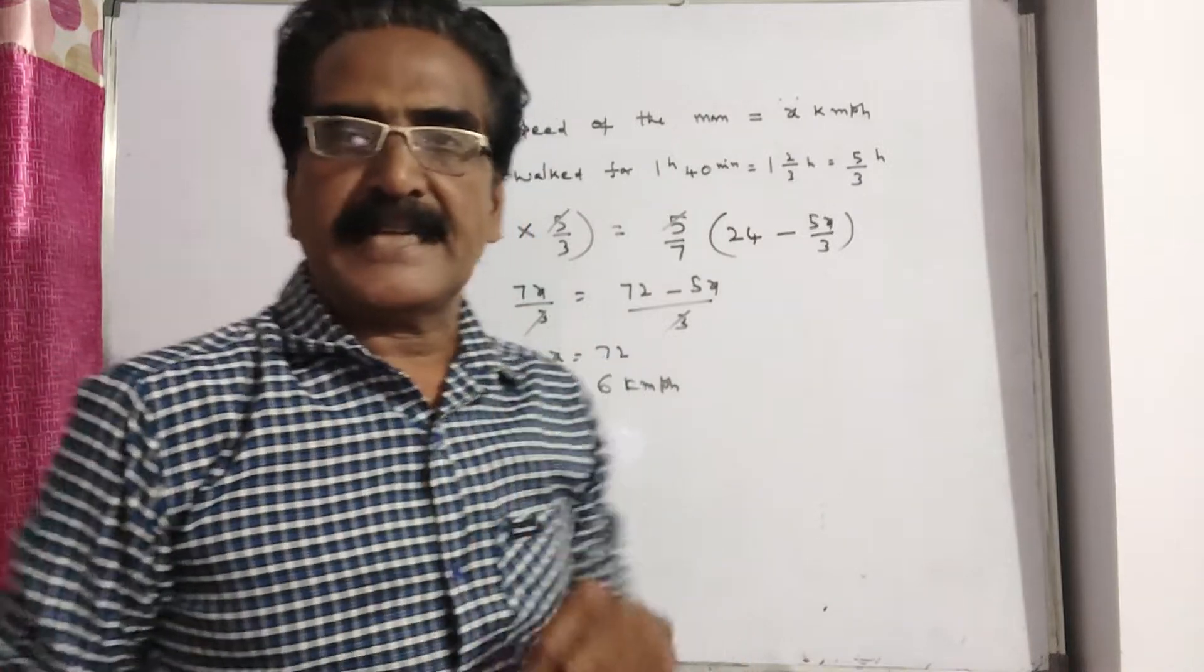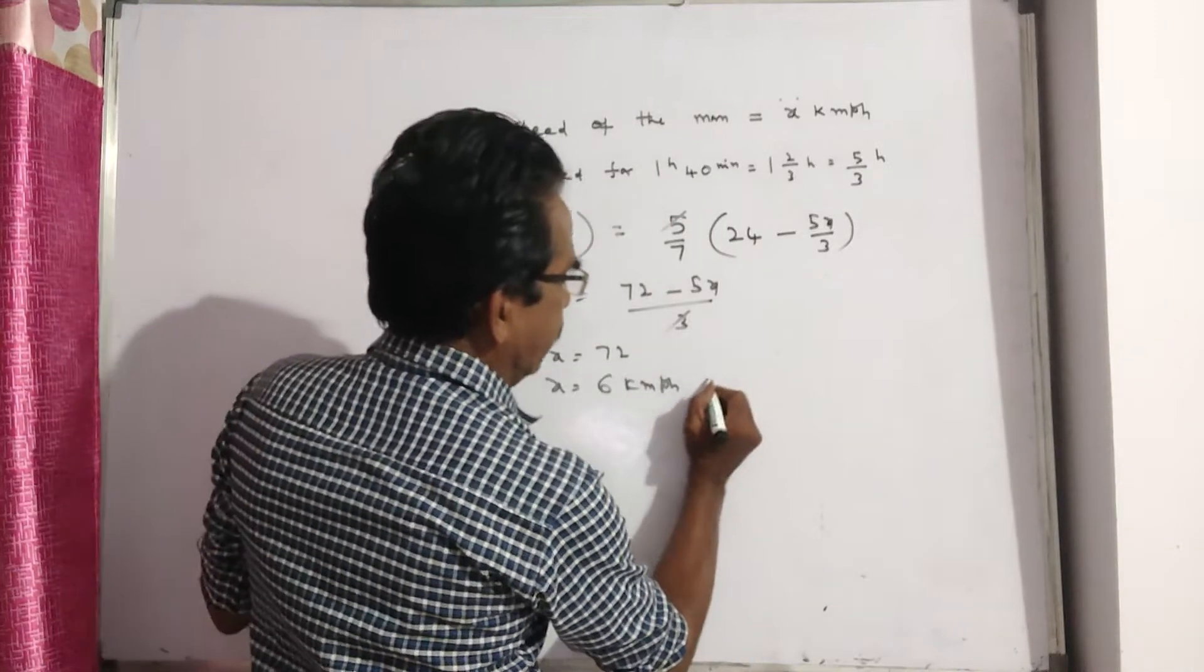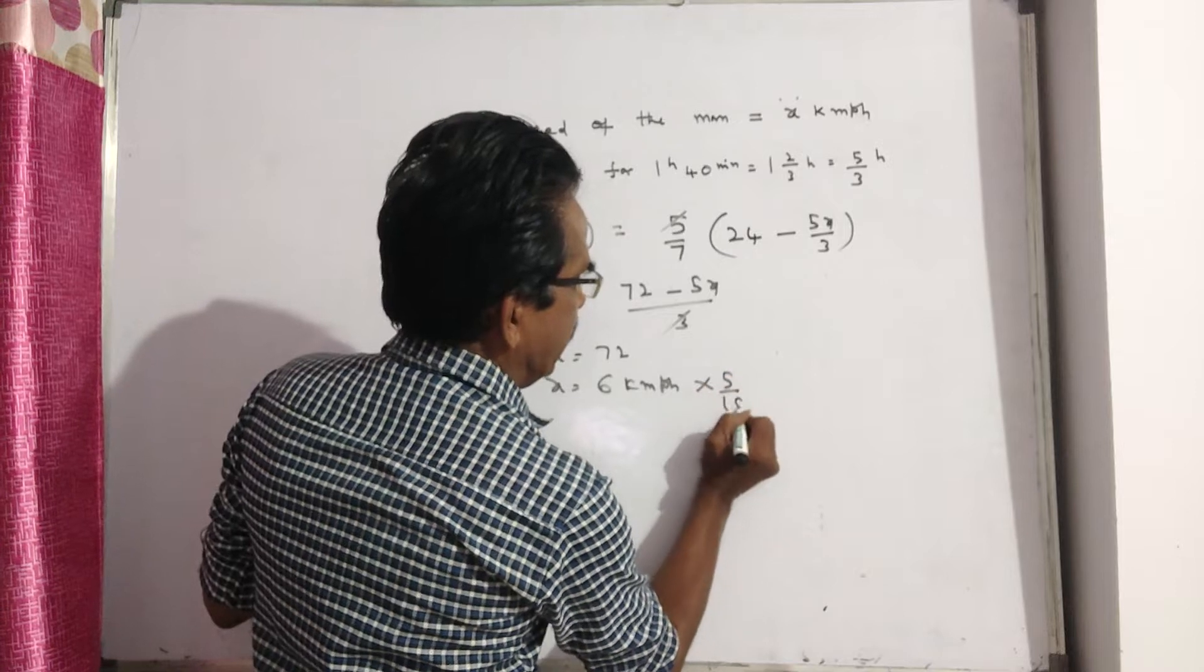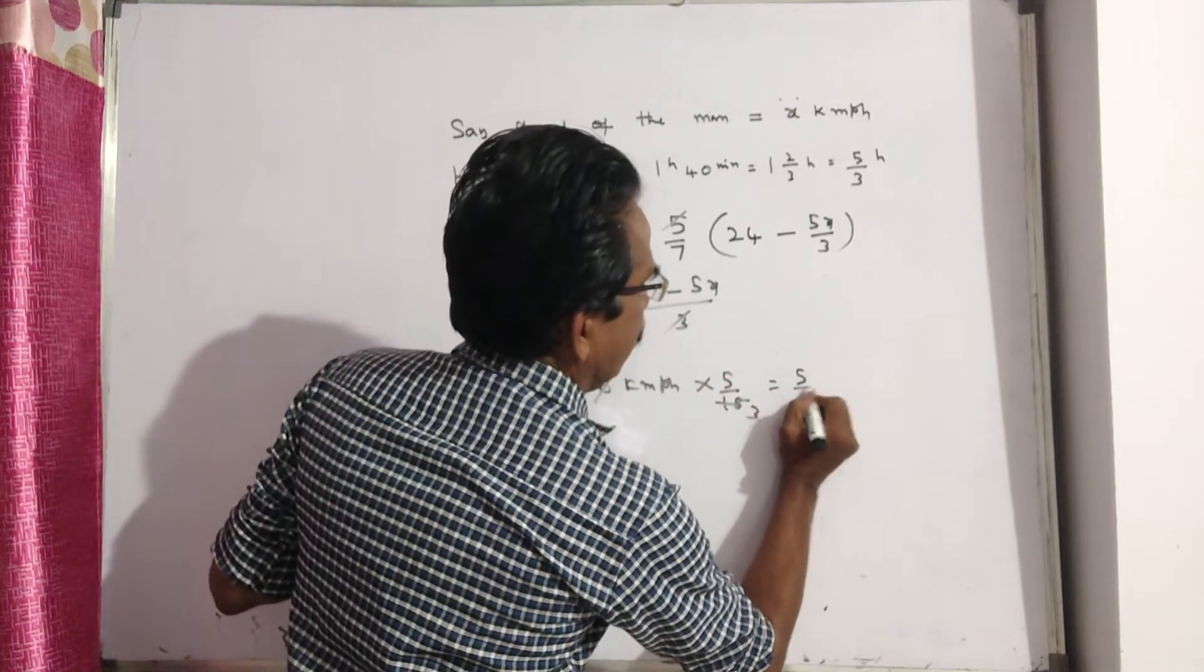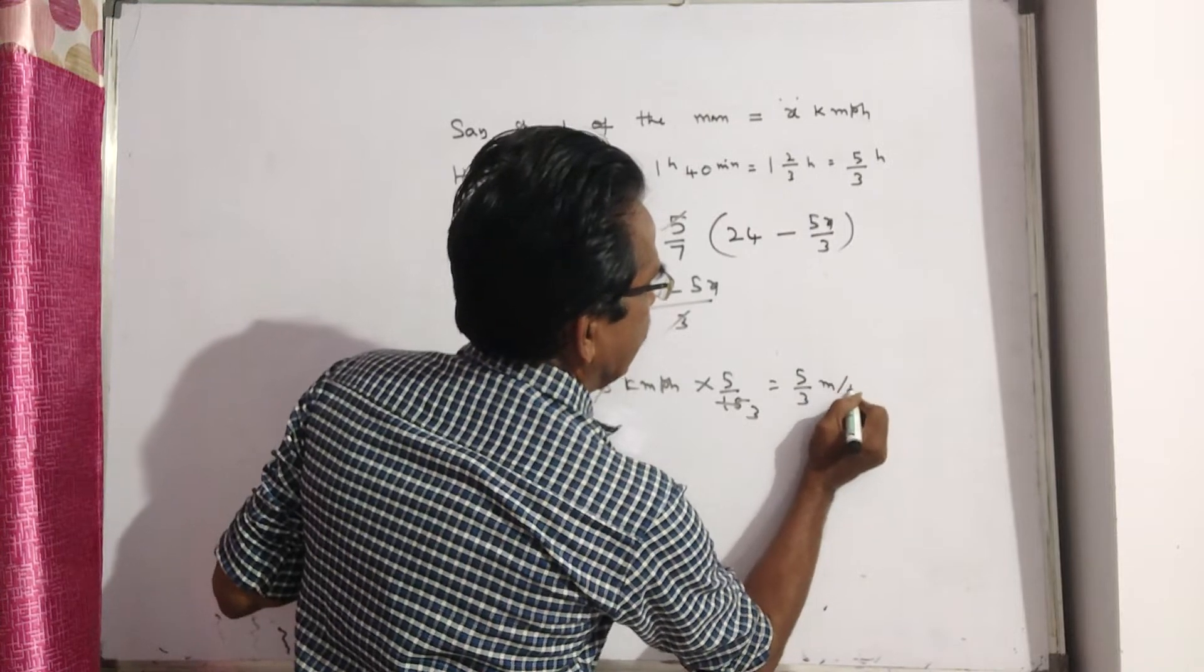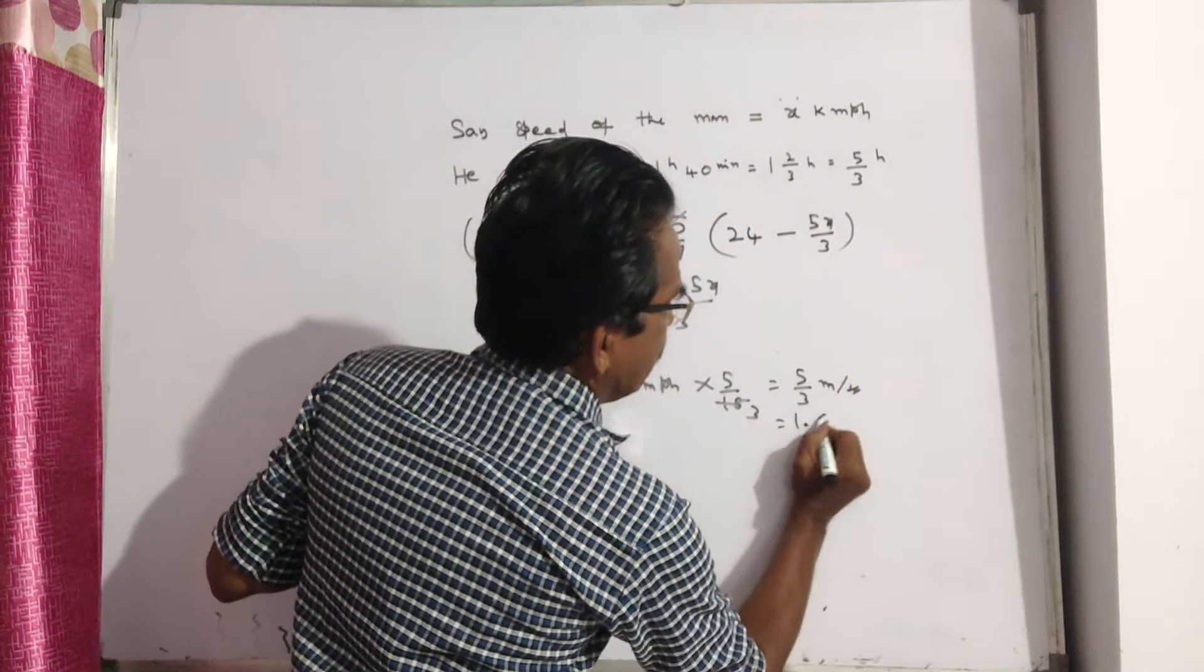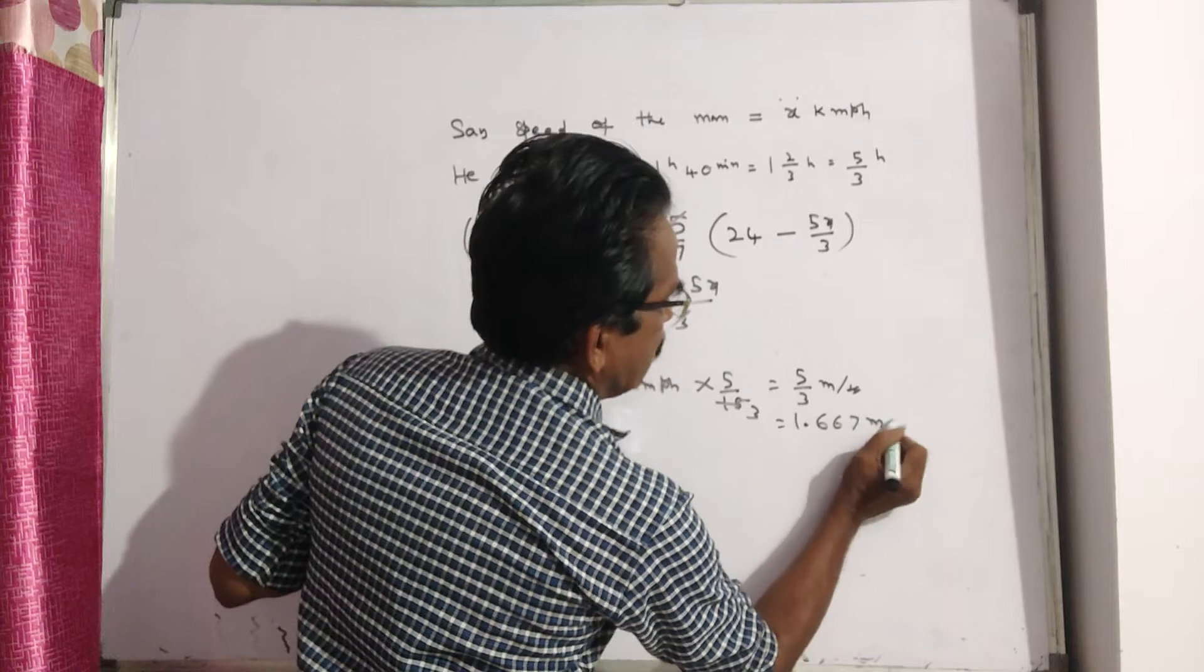But we want the answer in meters per second. So multiply by 5 by 18. 6 into 5 by 18 is 5 by 3 meters per second, or 1.667 meters per second, friends.